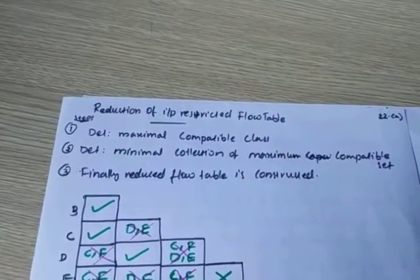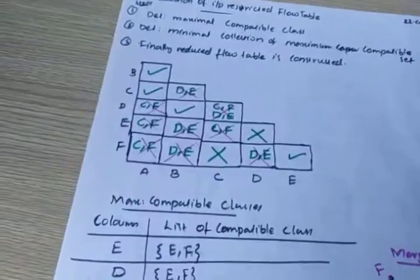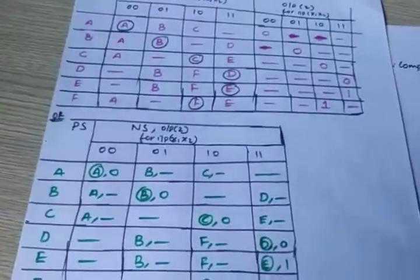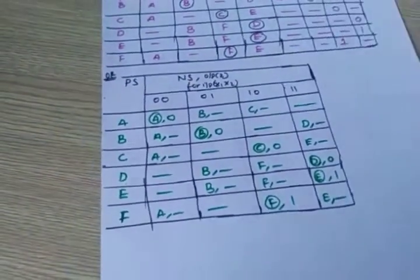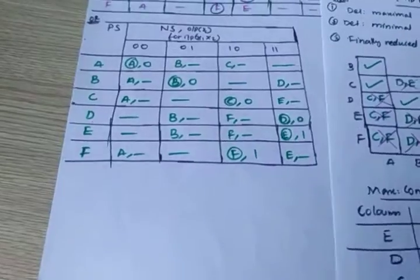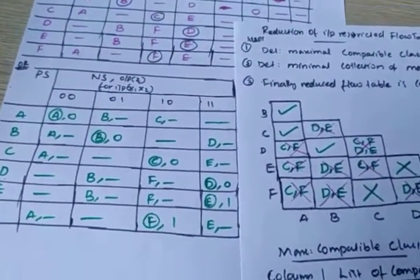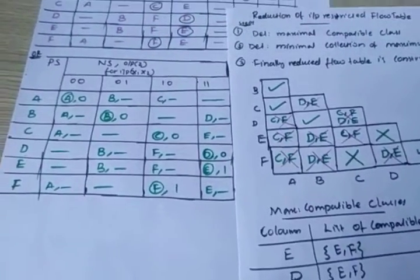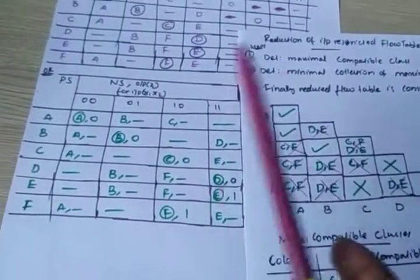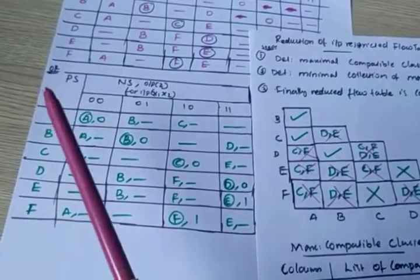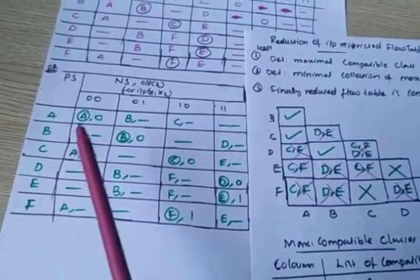First you have to find out the maximum compatible classes, and for that you have to analyze this with the implication chart. For that, first you need to take the primitive flow table. With this primitive flow table I will arrange an implication chart, so it will be easy to analyze. I have states from A to F — seven states.